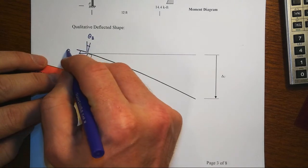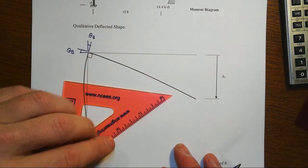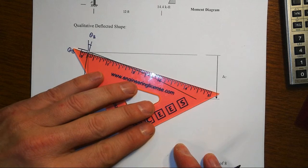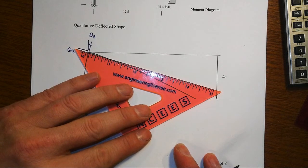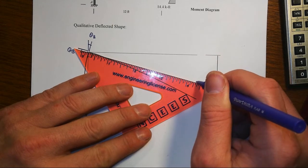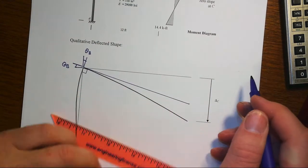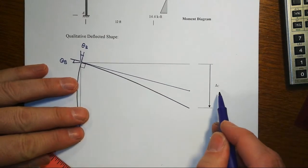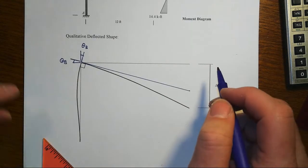So that's theta B, and that's theta B also. And when we extend that tangent then all the way across the rest of the structure,